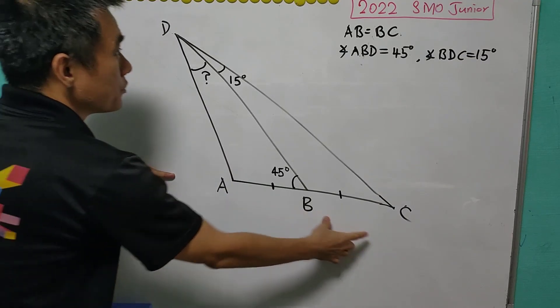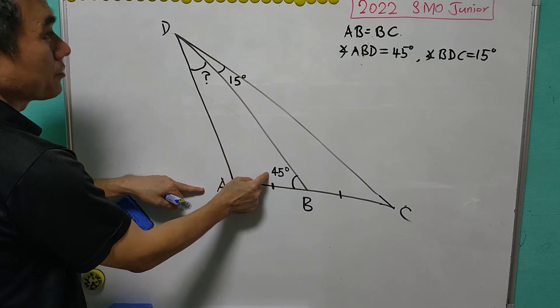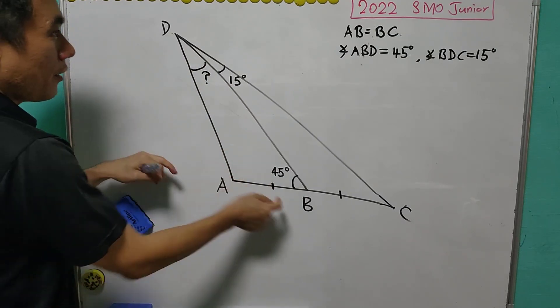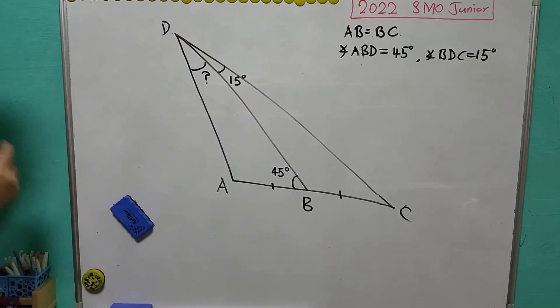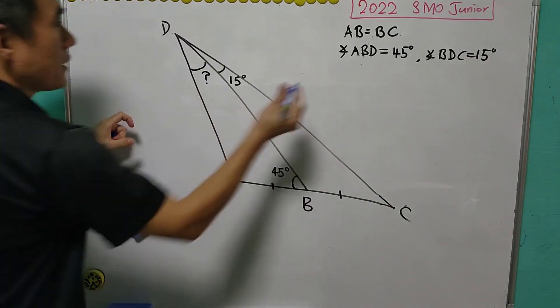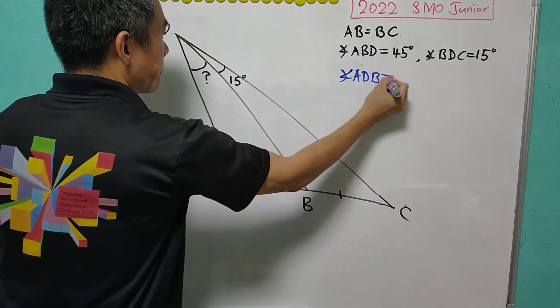That's why AB equals to BC. Given that the angle ABD is 45 degrees and the angle BDC equals to 15 degrees, we are asked to find the angle ADB in degrees.